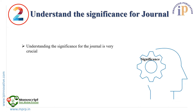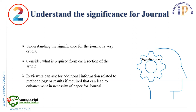Number two — understand the significance for the journal. It is very important to understand the significance of a manuscript for a journal. Consider what is required for each section of the article. The reviewer can ask for any additional information or experiments related to methodology or results if required, which can enhance the necessity of the paper for the journal.